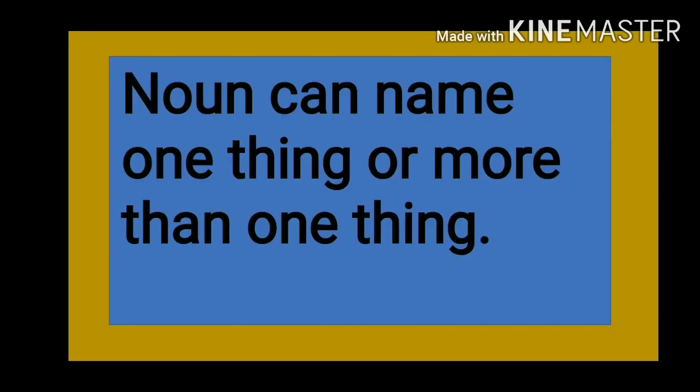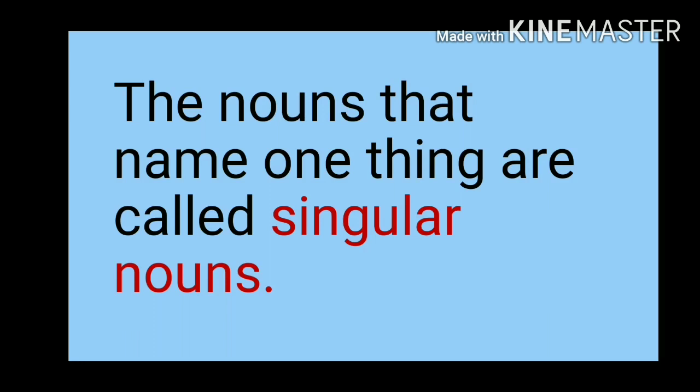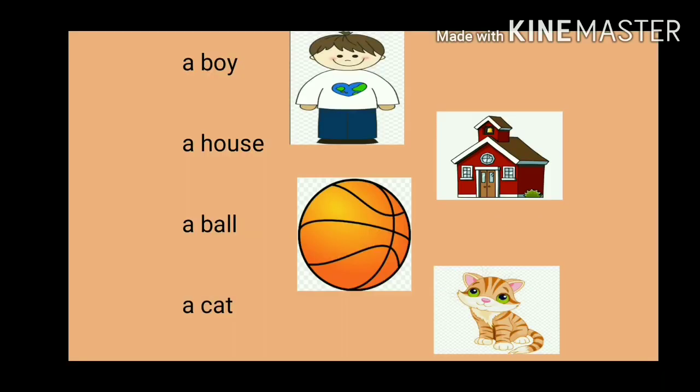A noun can name one thing or more than one thing. The nouns that name only one thing are called singular nouns. Let's see some examples — person, animal, place, thing. Can you see the picture? A boy, a house, a wall, and a cat. These all are examples of singular nouns.